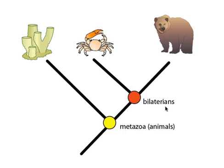Bilaterians are animals whose bodies have a plane of symmetry, left to right, for example. This red dot thus represents the last common ancestor of all bilaterians.